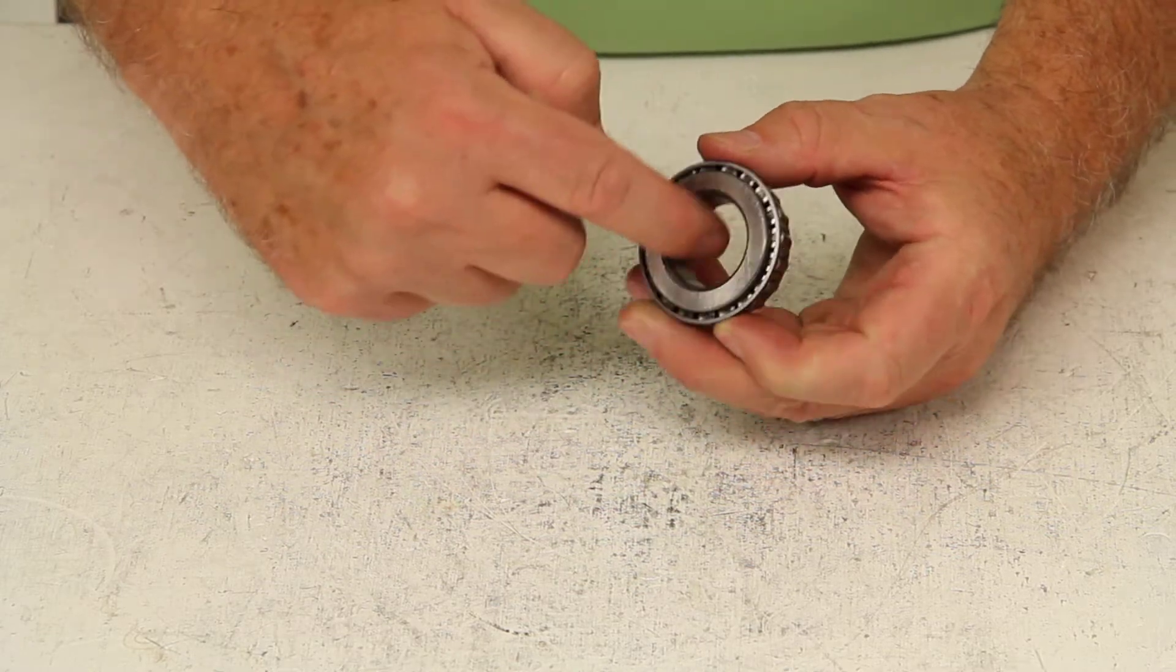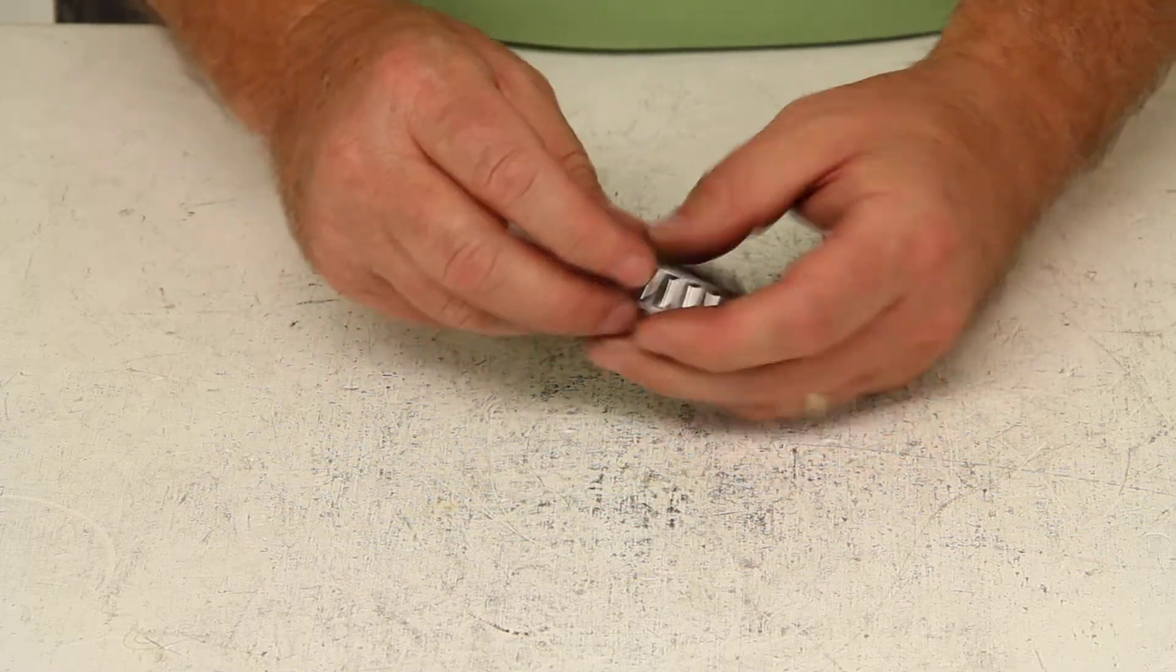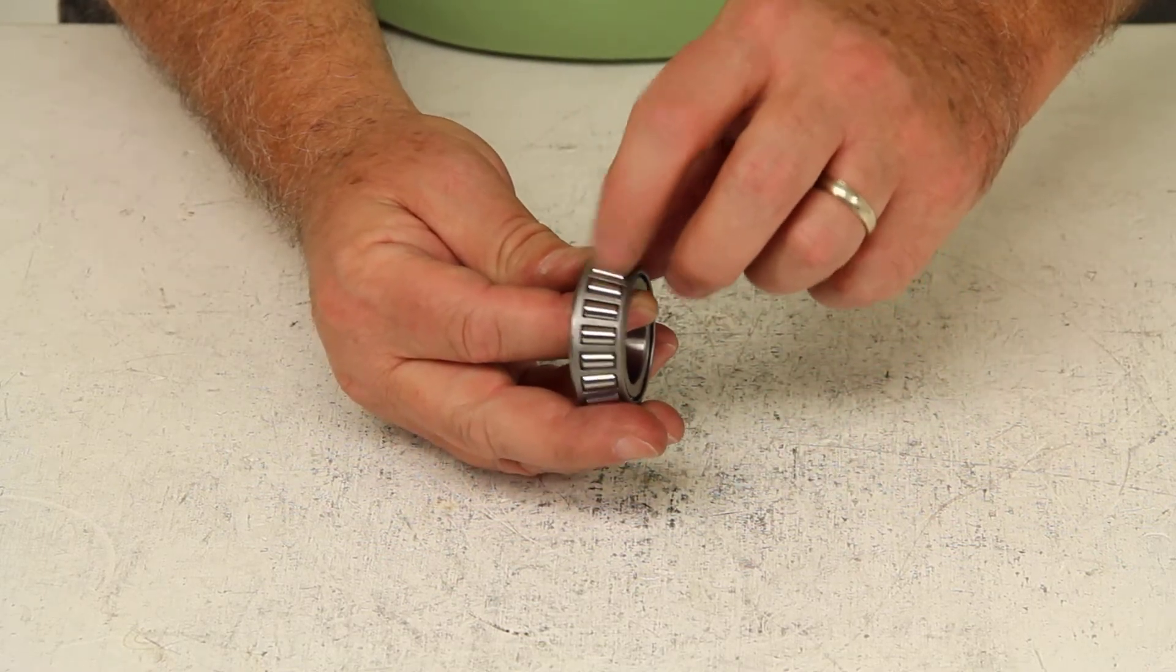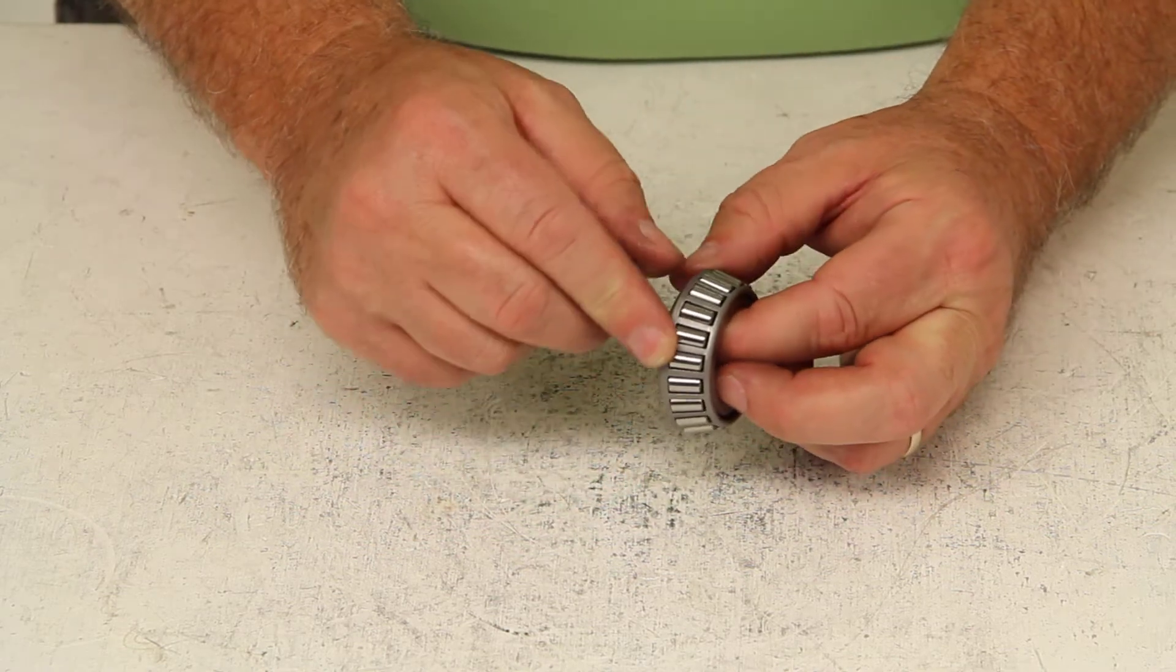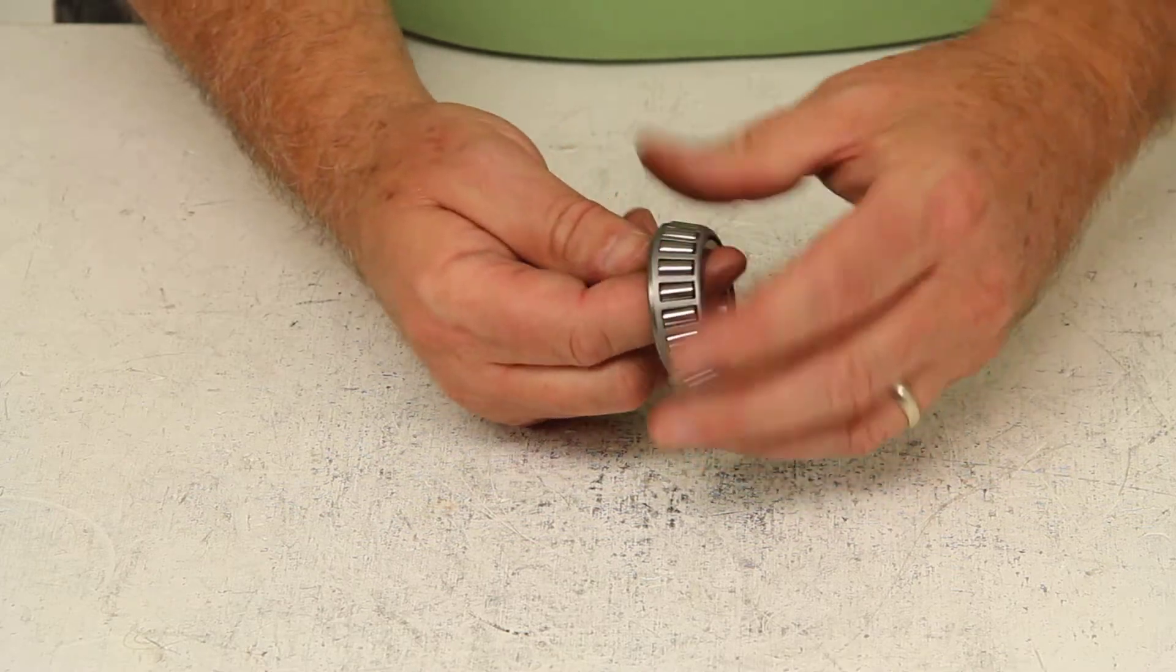The cone or the inner ring that the bearings would roll on, the taper bearings themselves right here, and then the cage or the roller retainer that the roller bearings are attached to.